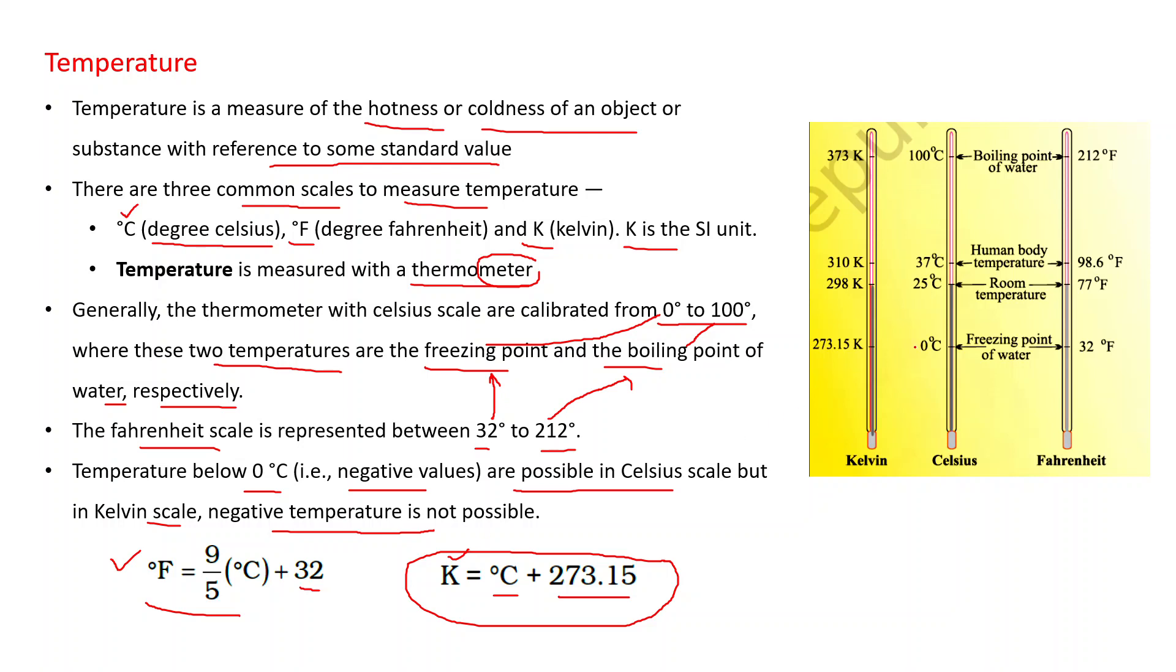Today, from this diagram, you can see, actually, this is the freezing point of water. Now you can see relationship between different units, different scales of temperature. 0 degree Celsius is equal to 32 degree Fahrenheit, and that is equal to 273.15 Kelvin. Human body temperature in degree Celsius is 37 degree Celsius, in Fahrenheit is 98.6 degree Fahrenheit, and in Kelvin this is 310 Kelvin. Okay student, thank you.